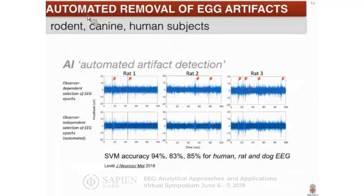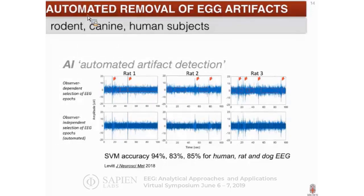We quickly realized that collecting EEG data in awake behaving non-restrained animals engenders a lot of artifacts. Different people in the lab had different ways of approaching artifact removal, so we reached a consensus that we must develop an automated way to remove artifacts and remove subjectivity from the analysis. We developed an algorithm that automatically detects and removes movement artifacts as well as eye movement artifacts from rodent, canine, and human subjects — and that work has been published. From that moment on, all EEG data analyzed in our lab is processed through this algorithm first, and then advanced signal processing is applied.